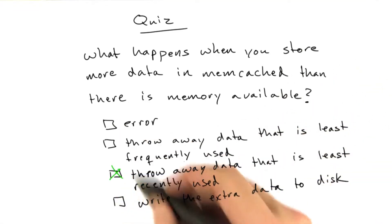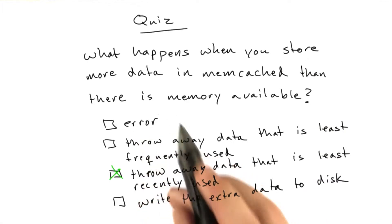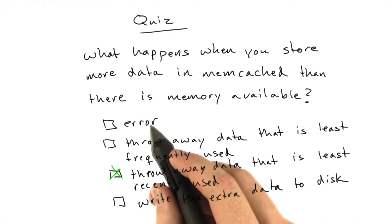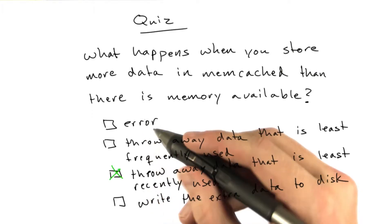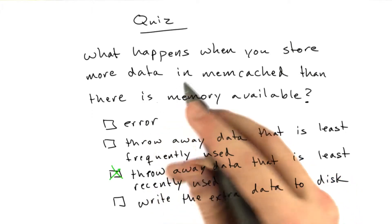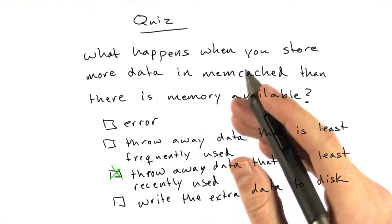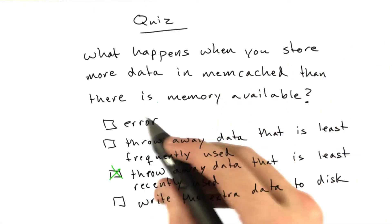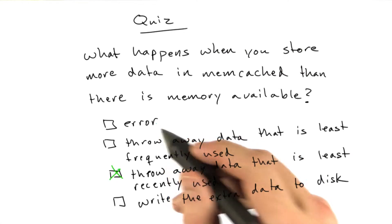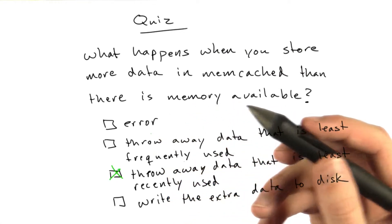Let's talk about some of these other answers. It doesn't throw an error. Now if this was a database, it should throw an error because you rely on your database to store your data. And if it's not going to be able to store it, it should tell you. It shouldn't just silently accept new data and throw away old data. But Memcached, it's not an error to store too much data. It can only store so much.